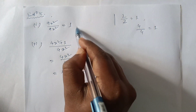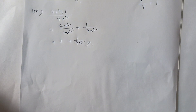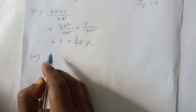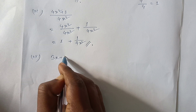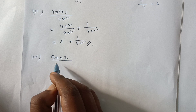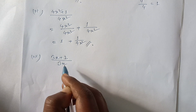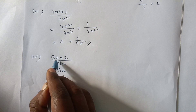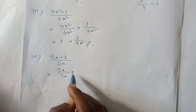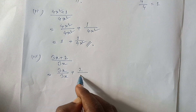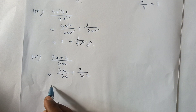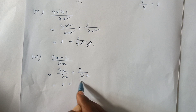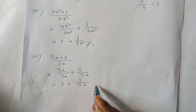Number 3: 3x plus 2. 3x plus 2 divided by 3x. This is the one. 3x plus 3x plus 2 by 3x, 3x plus 3x plus 1. 1 plus 2 by 3x, 2 by 3x. This is the one.